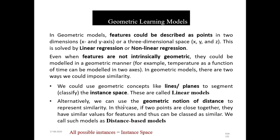So in geometric models, the features could be described as points in two dimensions. In the simplest of models, I have one attribute and one target variable x and y, and I can basically put them as a graph in two dimensions. I can put these features as points. If I have three features, I could put them in a three-dimensional space as x, y, z.